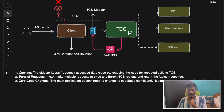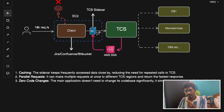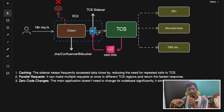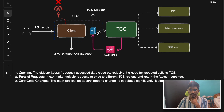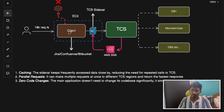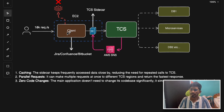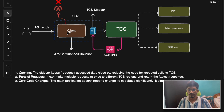The sidecar can make multiple requests at once to different TCS regions and return the fastest response. Since Atlassian products are used globally with multi-region deployments, if the Asian region server is down, the sidecar can quickly send a request to the nearest region — say European or Australian — and return whichever response comes back first. Additionally, the main application does not need to change its codebase significantly; it simply communicates with the sidecar, which handles retries and caching on its behalf.